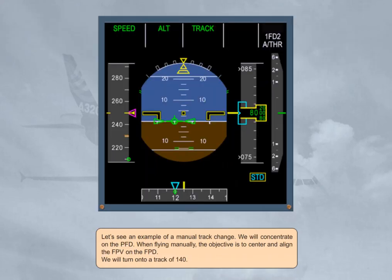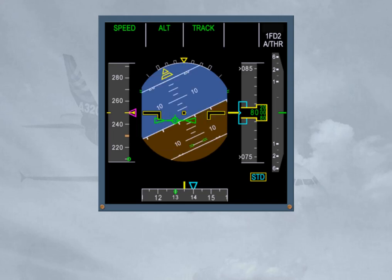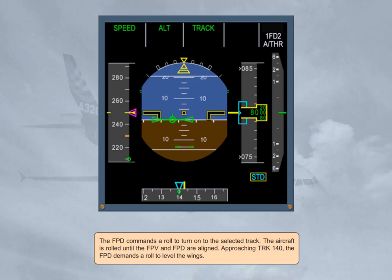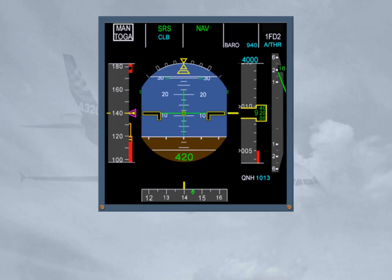Let's see an example of a manual track change. We will concentrate on the PFD. When flying manually, the objective is to center and align the flight path vector on the FPD. We will turn onto a track of 140. The FPD commands a roll to turn onto the selected track. The aircraft is rolled until the flight path vector and FPD are aligned. Approaching track 140, the FPD demands a roll to level the wings. When in track flight path angle, the FPD reverts to flight director bars in case of go-around.